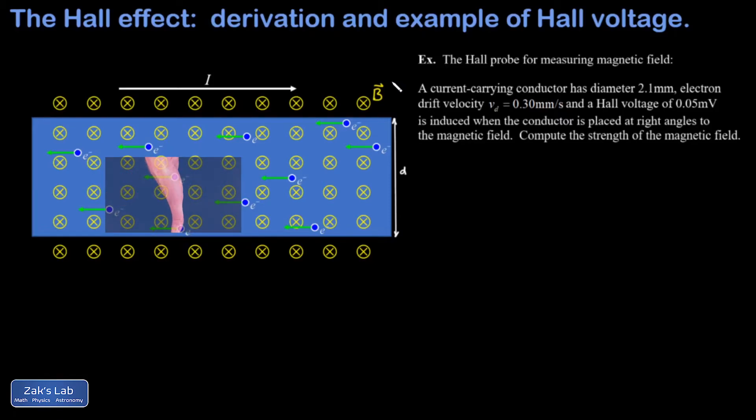As you can see, our thumb ends up pointing down, but these electrons are negative charges, so we then reverse that result and we get an upward magnetic force on the electrons.